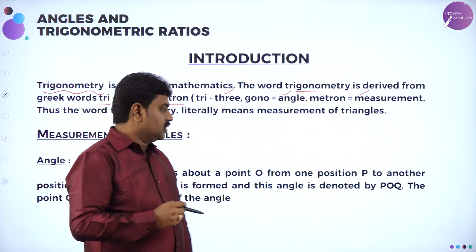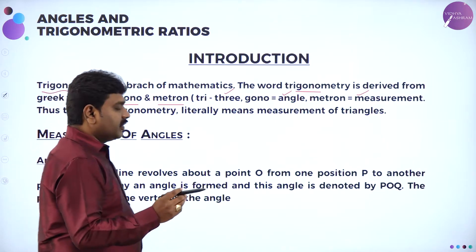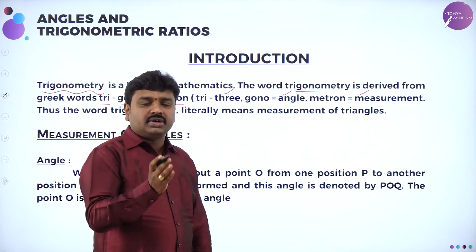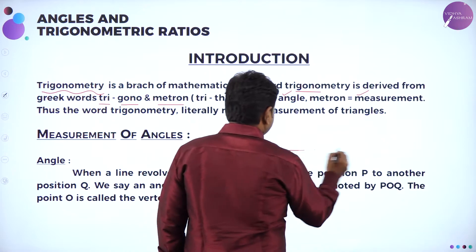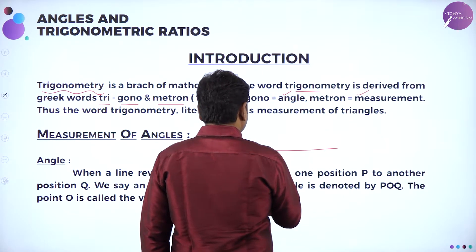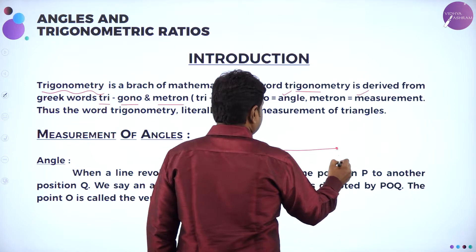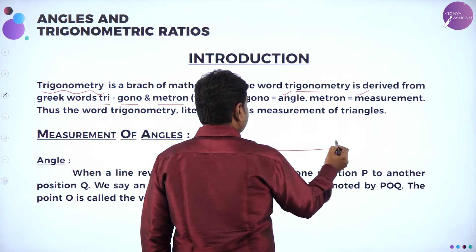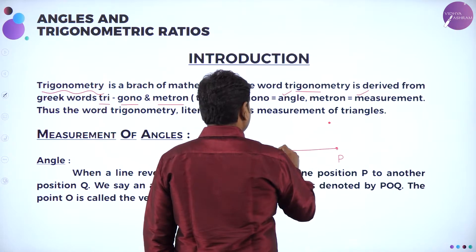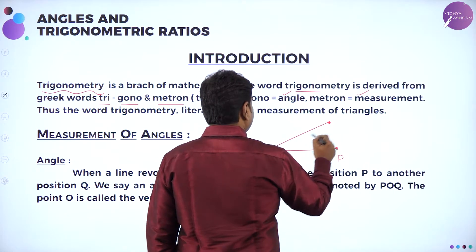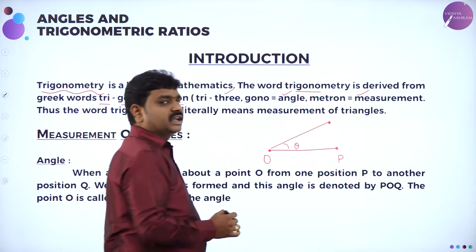Now, what is an angle? When a line revolves from one point to another point, it makes an angle. For example, OP is a line. Suppose it moves from P to Q — the line moves from P to Q by making an angle theta, and we call theta as the angle made by the line.